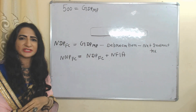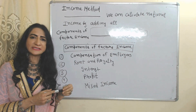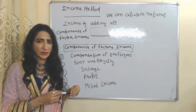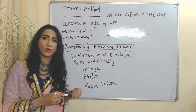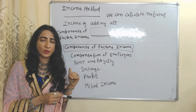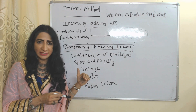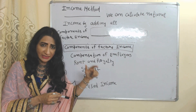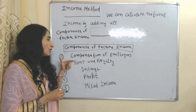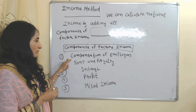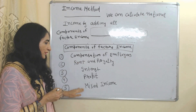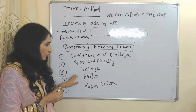So by the value-added method, we can calculate national income. Now we will see the income method. According to the income method, we can calculate national income by adding all components of factor income. The components of factor income are: compensation of employees, rent and royalty, interest, profit, and mixed income.